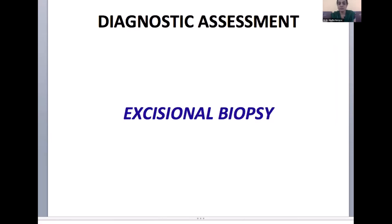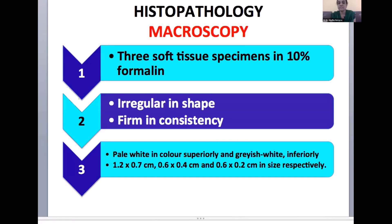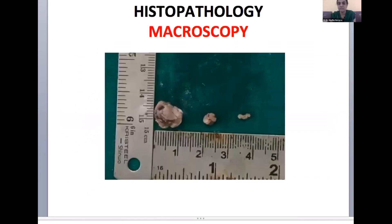For the purpose of diagnostic assessment, an excisional biopsy was performed and the specimens were sent to our department for histopathological analysis. Three soft tissue specimens were sent in 10% formalin, which were irregular in shape, firm in consistency, pale white in color superiorly and grayish white inferiorly, measuring approximately 1.2×0.7, 0.6×0.4, and 0.6×0.2 cm in sizes respectively. These are the macroscopic pictures.